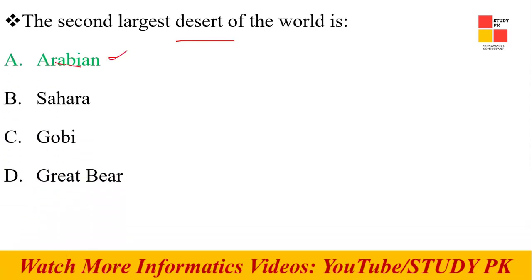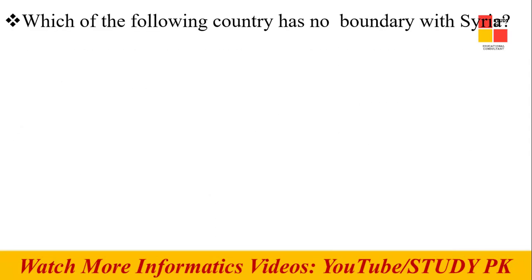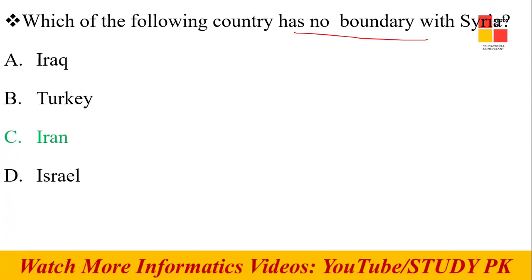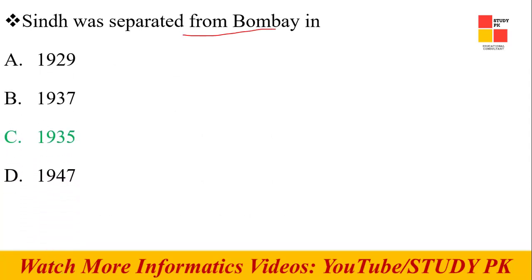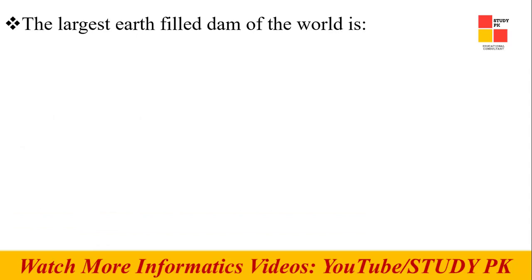Next question: What is the second largest desert in the world? The Arabian Desert. The largest is the Sahara, then the Arabian Desert. Next question: Which of the following countries has no boundary with Syria? The right option is Iran.